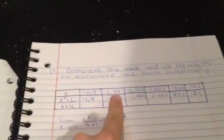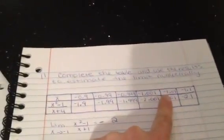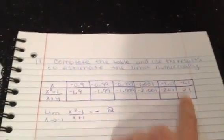So, as you see, we have negative 0.9, negative 0.99, negative 0.999, negative 1.001, negative 1.01, and negative 1.1.